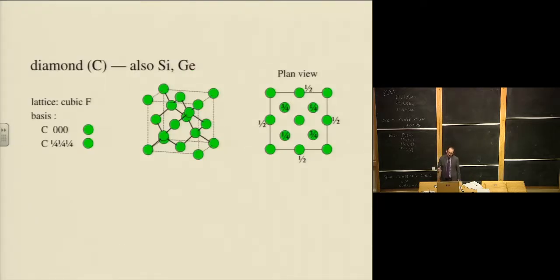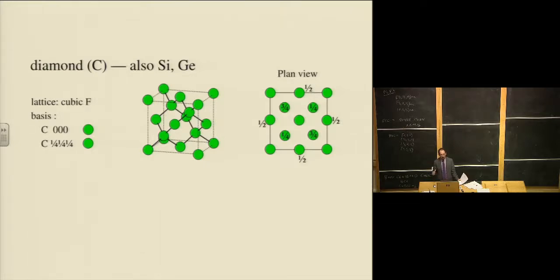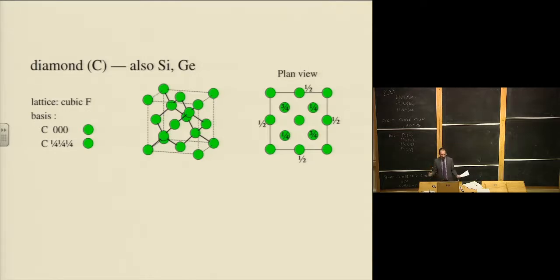Another structure we encounter frequently is the diamond structure — the structure of carbon, silicon, and germanium. It is also based on the FCC lattice: you can see atoms at the corners and centers of the faces. But there are additional carbons, and their positions can be described as displaced by (1/4,1/4,1/4) from every FCC lattice point. So you just say it's an FCC lattice with a basis of two atoms: one at (0,0,0) and one at (1/4,1/4,1/4) — that's sufficient to describe everything.